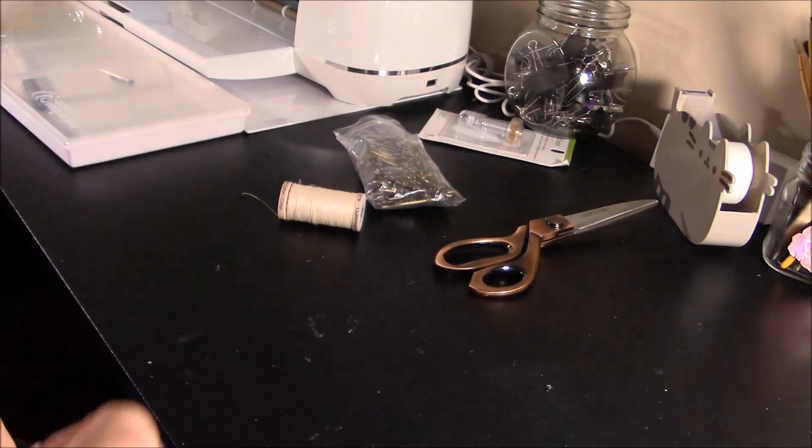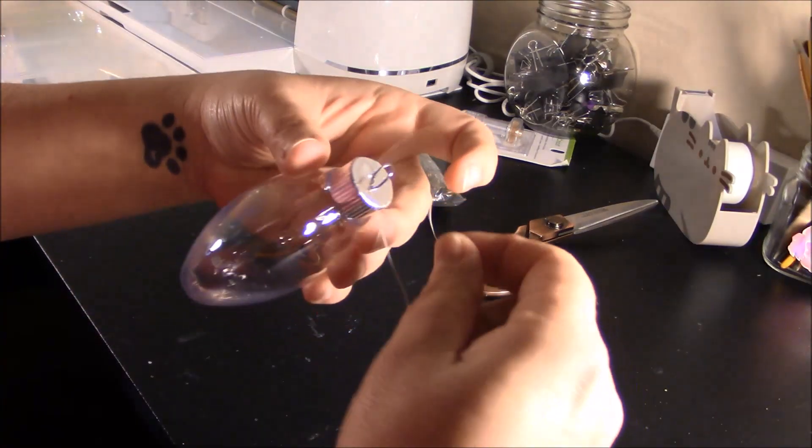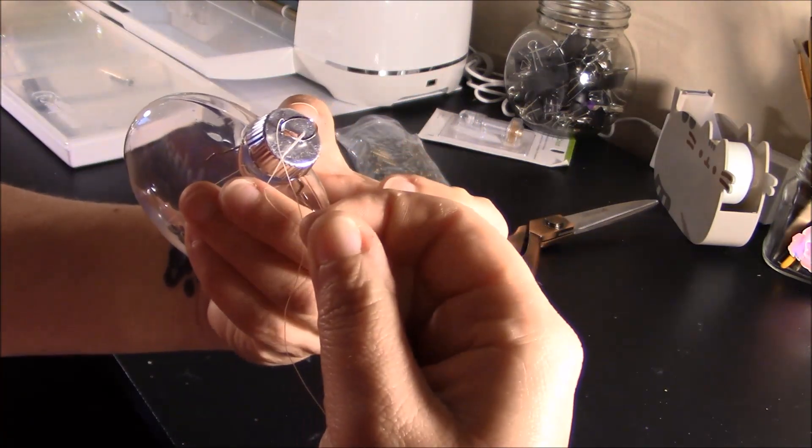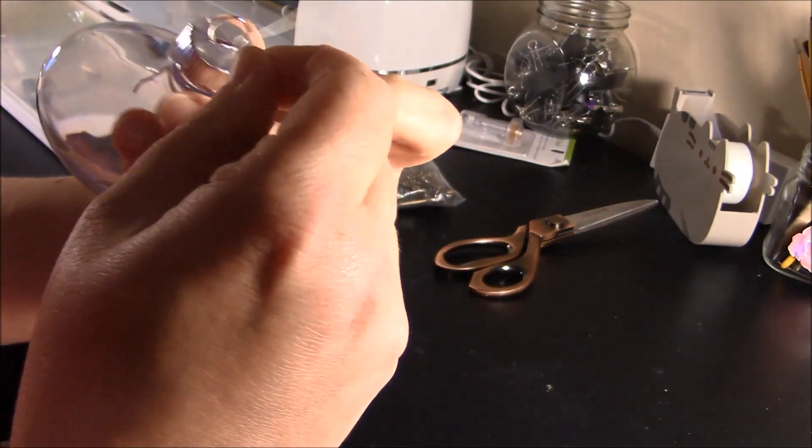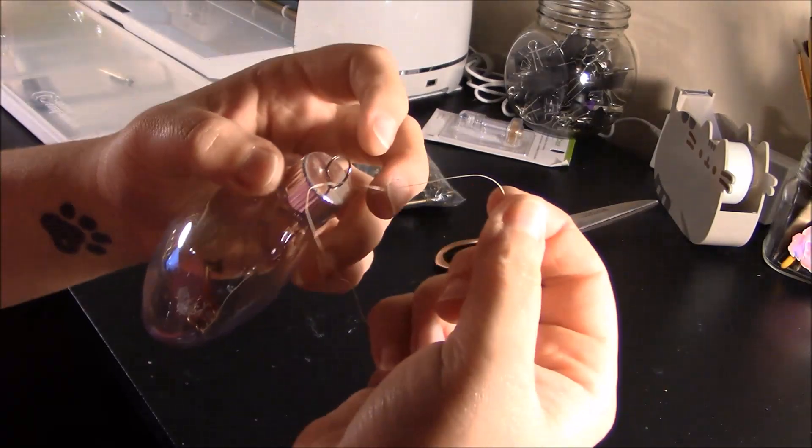So then, once I've done that, I will loop it through the little ring. And again, you won't see this with invisible thread. It'll be really hard to see if you use invisible thread. But again, if I did that, you guys couldn't see what I was doing, and that would just be hard.